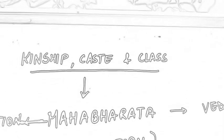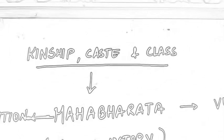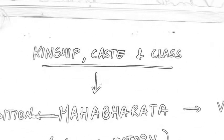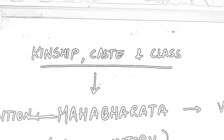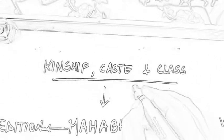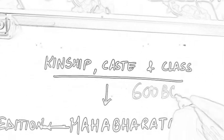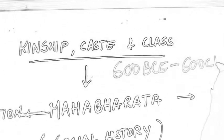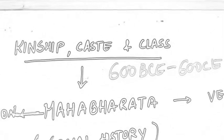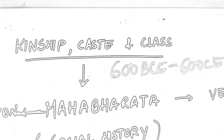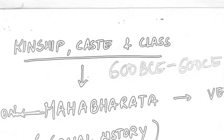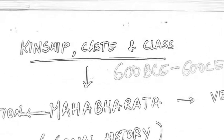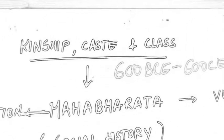Very good morning students. Let us start our next chapter today — chapter number 3: Kinship, Caste and Class. This chapter particularly focuses on the history of 600 BCE to 600 CE. So in chapter number 2, where you were studying about the political history of India, this chapter particularly focuses on the social history of India.